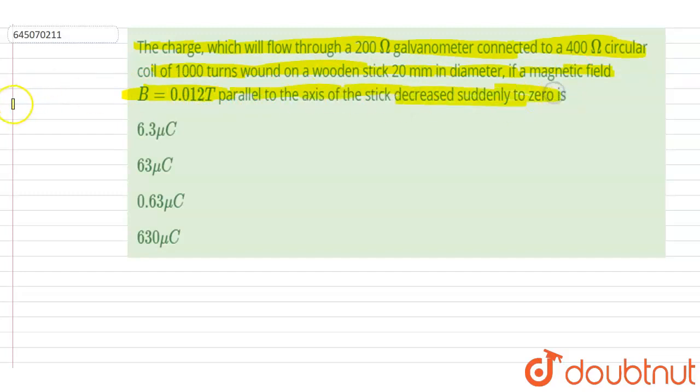So if you see, the galvanometer itself has this much resistance and it is connected in series with a circular coil having a resistance of 400 ohm. So if I write down the R equivalent, it will be R1 plus R2 since they are in series, right? So it will be 200 plus 400, that equals 600 ohm.